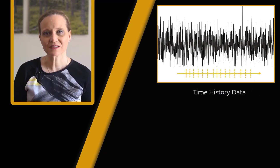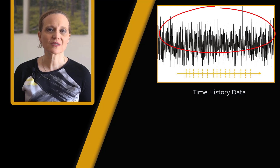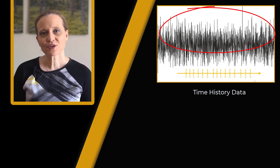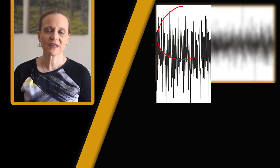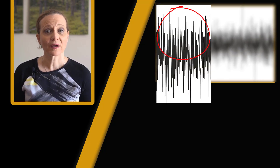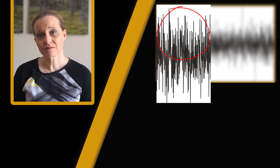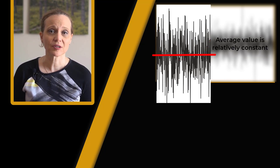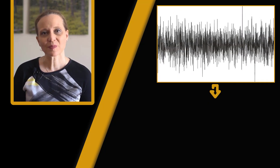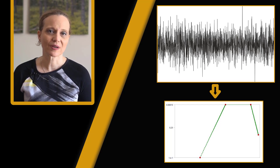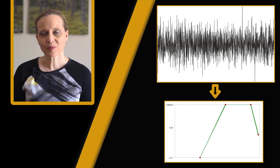Looking at the raw random excitation data, we can see that it is extracted from time history data and contains many frequencies with the amplitude constantly changing. One feature of random excitation is that at a given frequency the amplitude of the excitation changes, but for many processes its average value tends to remain relatively constant.